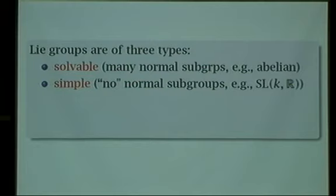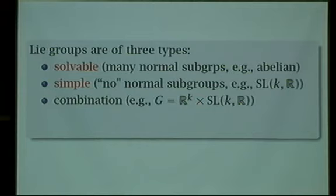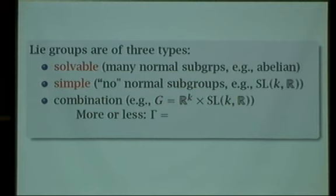It's a fact that the only normal subgroups of SLK of R are tiny finite groups. In fact, if K is R, there are no normal subgroups at all. A connected Lie group is either solvable or simple or some combination of the two — what's called semisimple. If G is a combination of a solvable group and a simple group, then Gamma will also be a combination of a lattice in the solvable group and a lattice in the simple group.